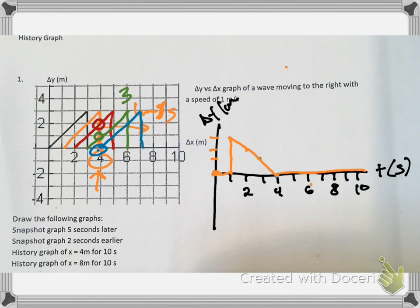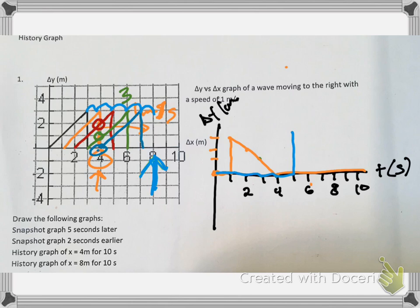Imagine we're looking just at that four-meter point, at the medium at that point. For the second history graph, we're looking at the eight-meter point. The difference here is that it's going to take five seconds before the medium at eight meters gets displaced. So we go five seconds, at which point it gets displaced up. It takes three seconds to go down, and then it continues at zero. So the blue line would be our history graph at eight meters for ten seconds.